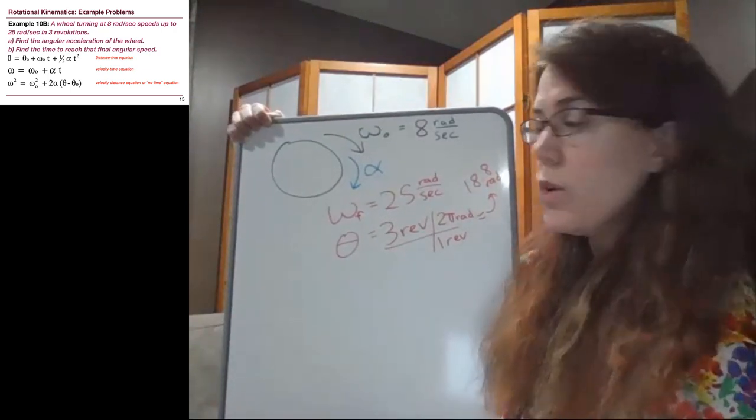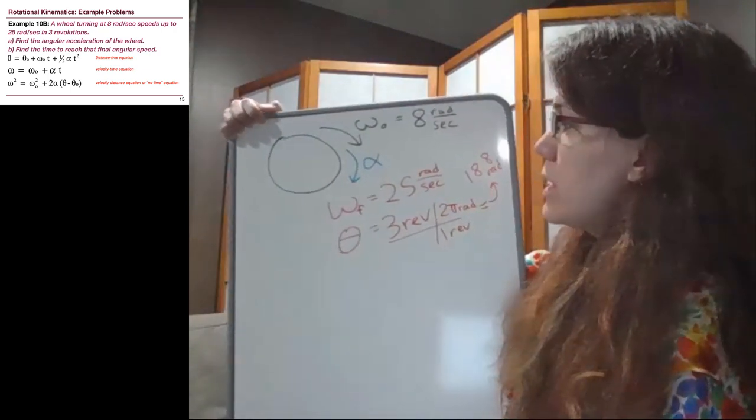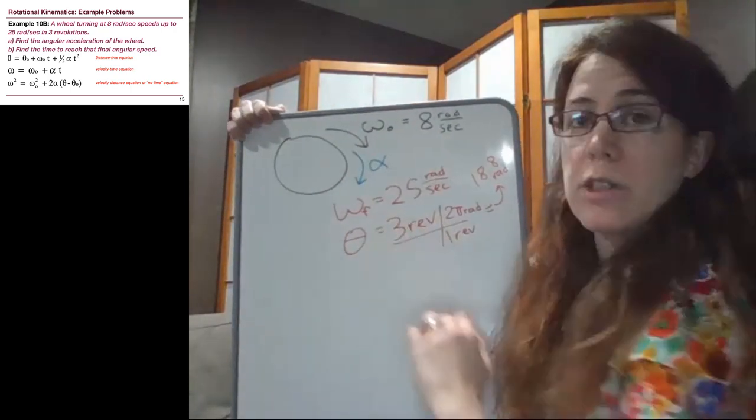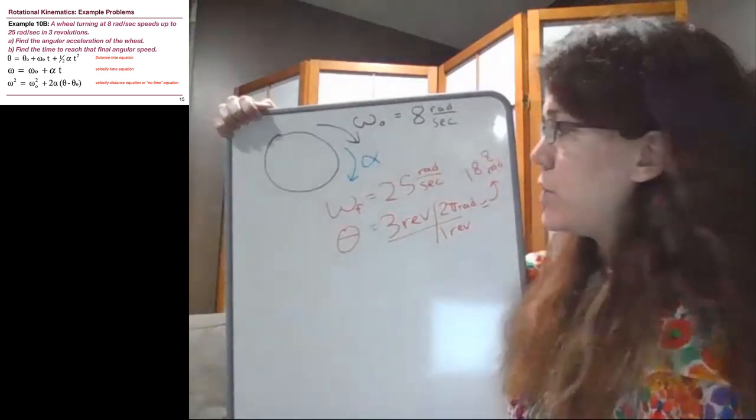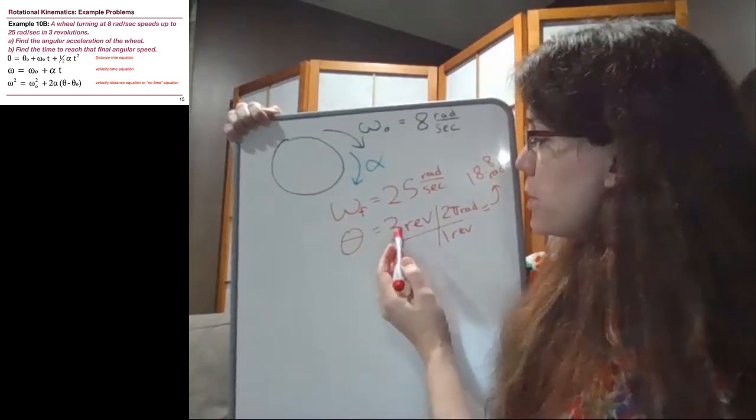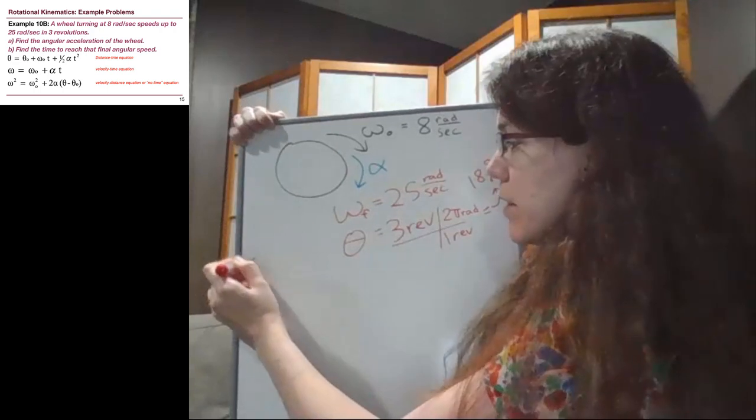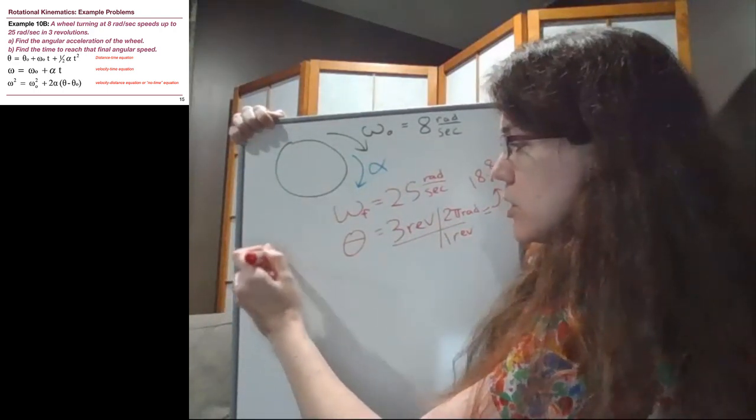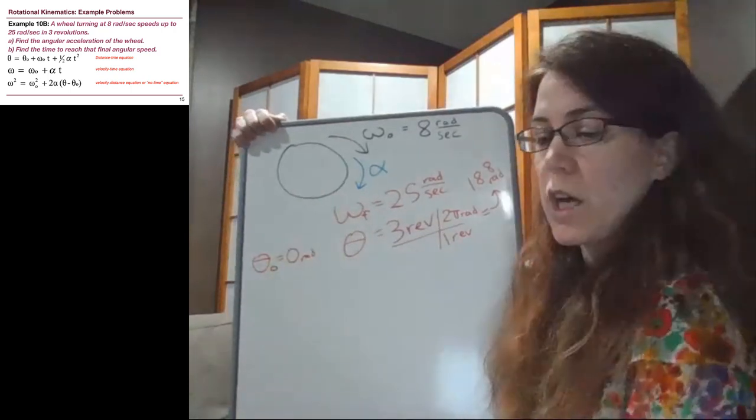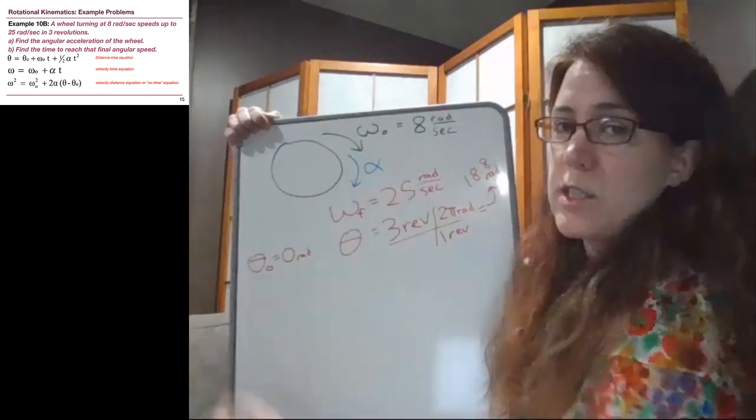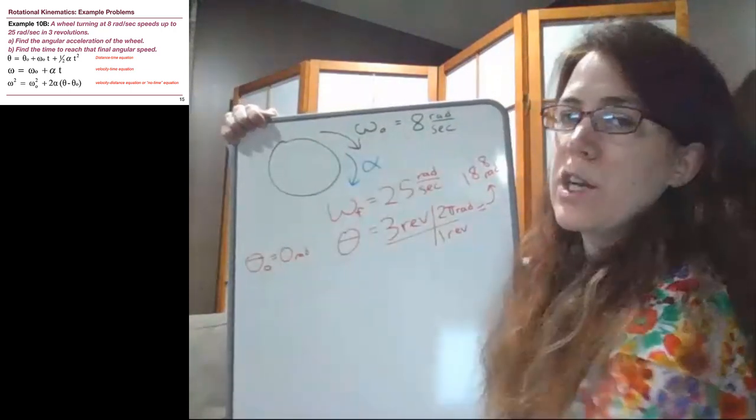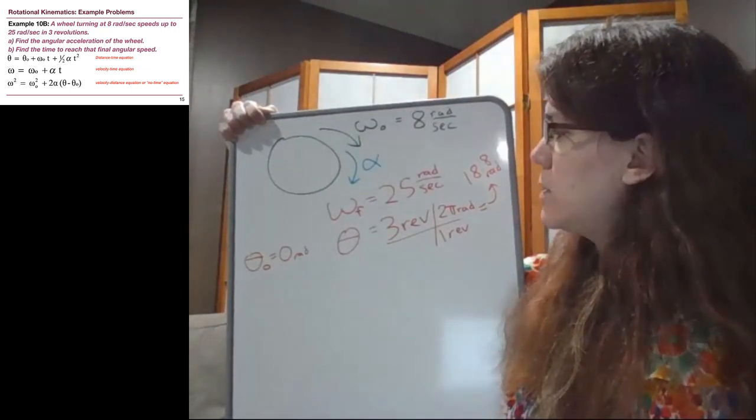The key thing is that to start the problem we draw a picture and list the given information. That's been true for all kinematics problems we do. If this is our final position in angle, then we note that the initial position is 0. In the same way that with distance problems we had initial x equal to 0 and cared about the final x value, same idea in this case.